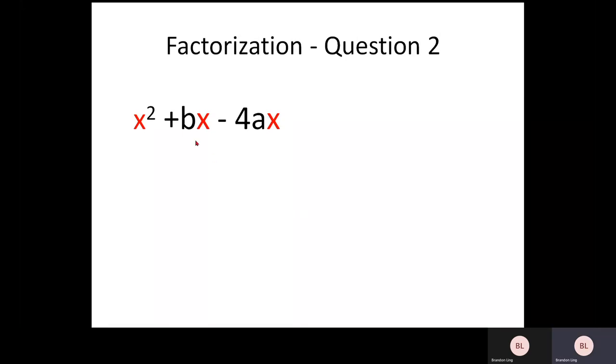Question number two, X squared plus BX minus 4AX. So here you have three terms with a common factor of X. So when you pull out the X outside the bracket, what you are actually creating in the bracket will be the remaining terms, which are X plus B minus 4A.